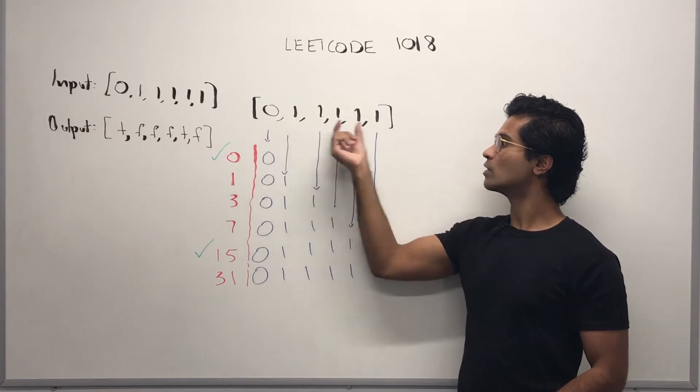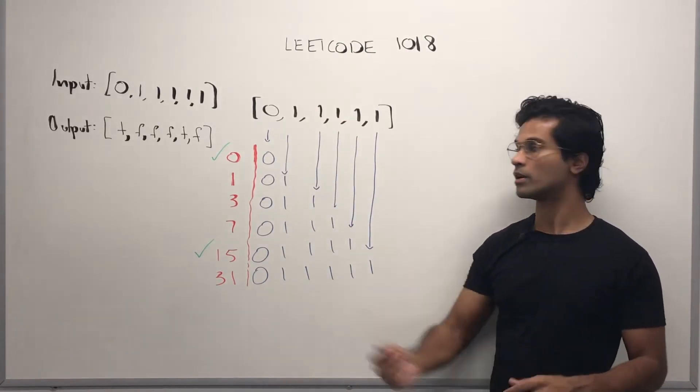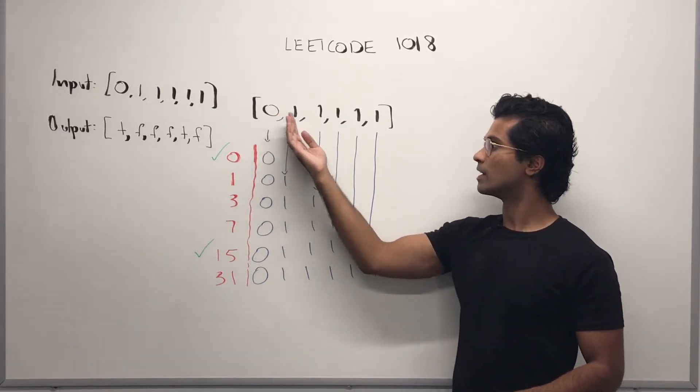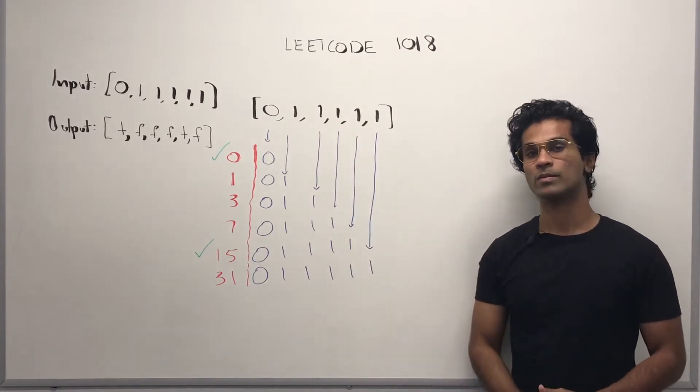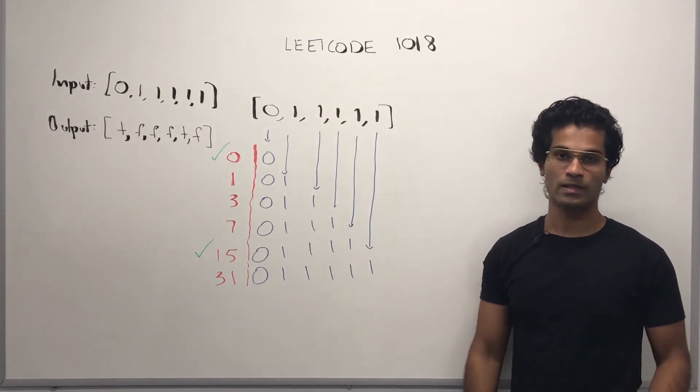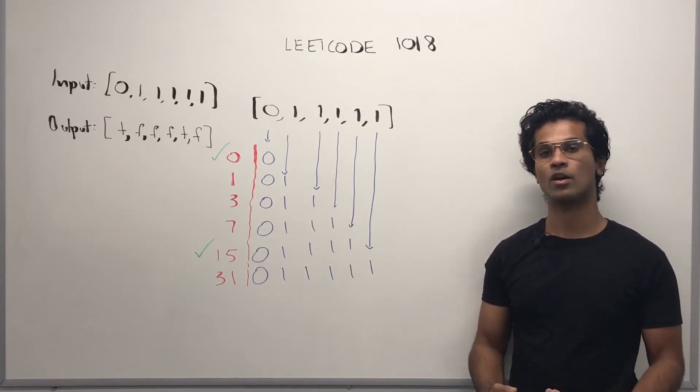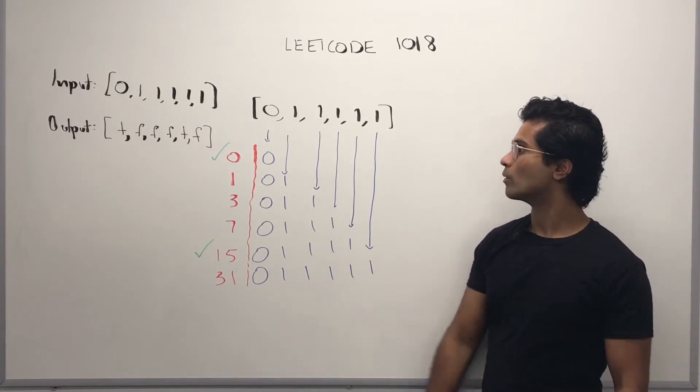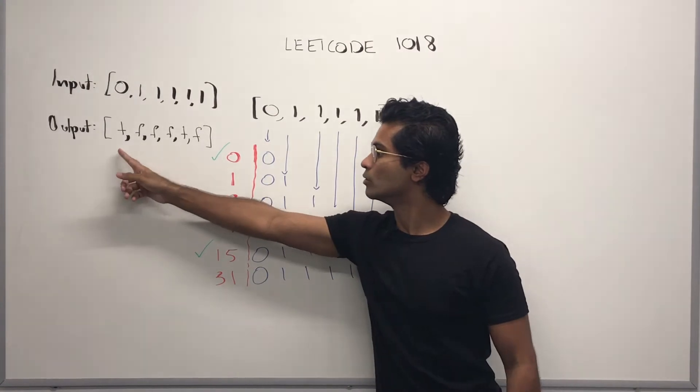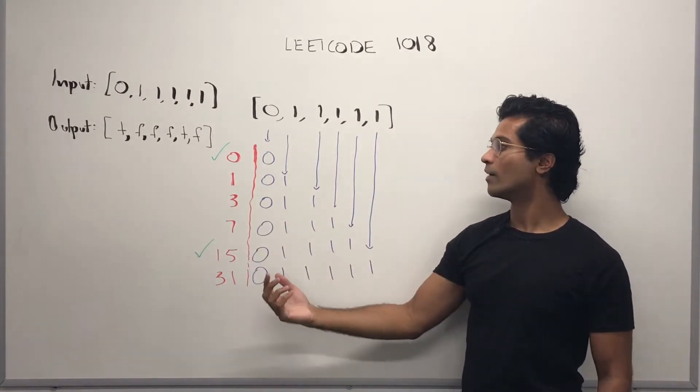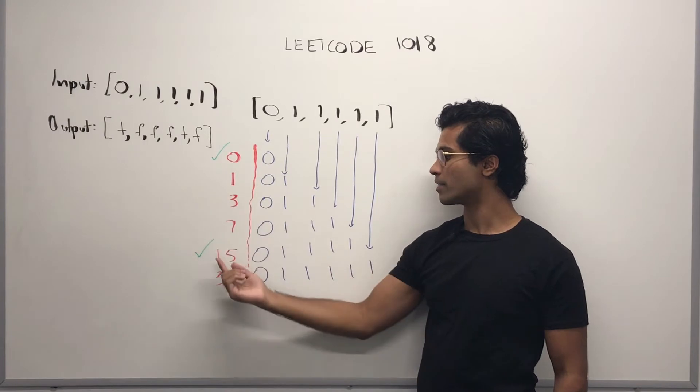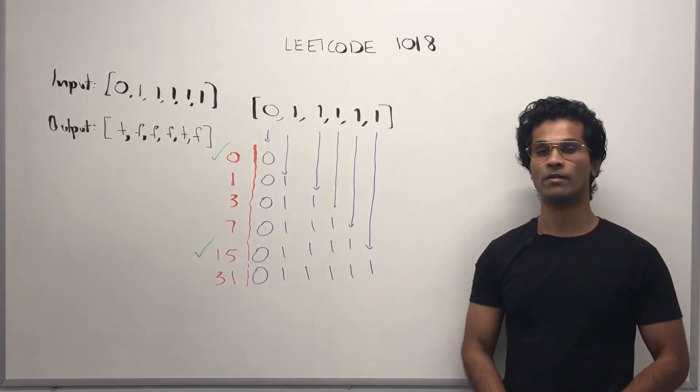So each of these we want to know if the number starting from the beginning till that index i is going to be divisible by 5 or not. If it is, we're going to set the boolean in the output array to be true. So for this input we're going to have true, false, false, false, true, false. And we have this because this and this are divisible by 5.